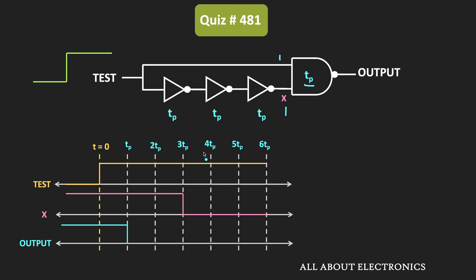Up to time 3tp, both the test signal and the x signal are high. So up to that time, the output of the NAND gate remains low. After 3tp, when the x input becomes low, once again the NAND gate output will become high. The NAND gate responds to the change in x input after 1 gate delay, so after that 1 gate delay, the output becomes high again.